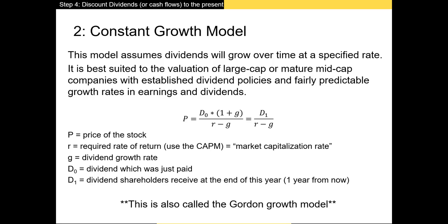The next model is the constant growth model, which assumes that our cash flows or dividends grow by a constant percentage each year. We often use this formula when valuing stocks that pay a regular dividend, making it best suited to large profitable stocks. We take the dividend just paid and multiply it by one plus the expected dividend growth rate G, then divide by the quantity of our discount rate minus our growth rate.